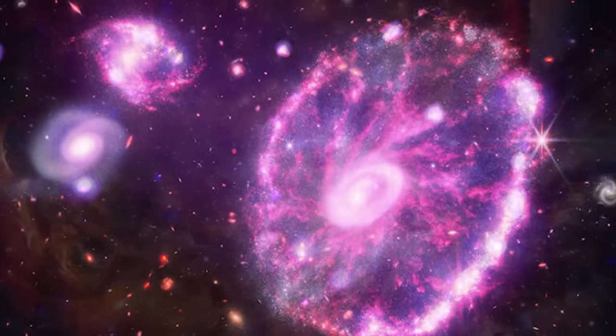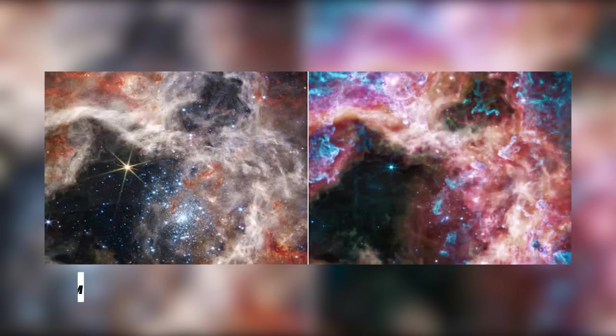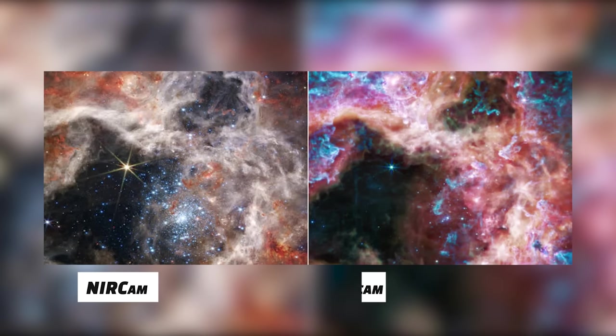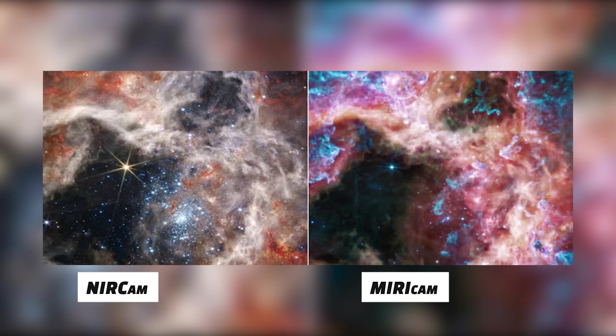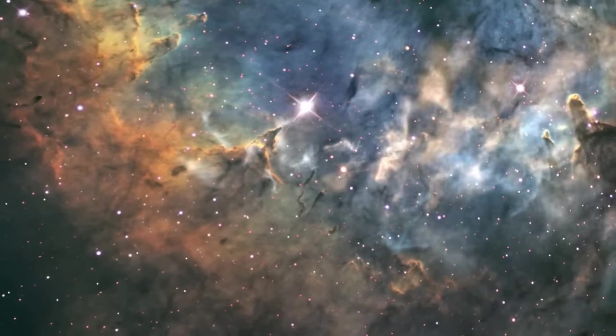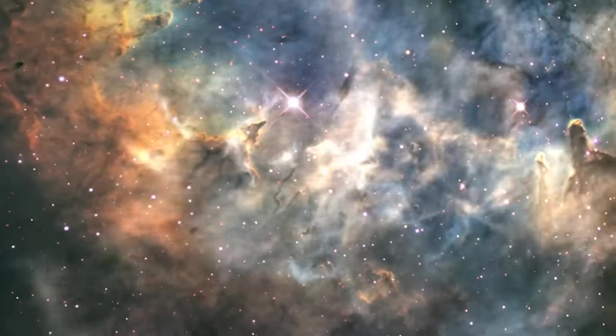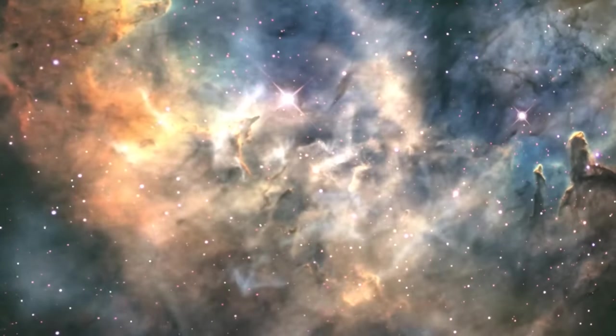This is a side-by-side comparison of NIRCam, left, and MIRI, right, images of the Tarantula Nebula obtained by the James Webb Space Telescope. This nebula, located in the Large Magellanic Cloud Galaxy, is the greatest star-forming zone in the vicinity of our own galaxy.